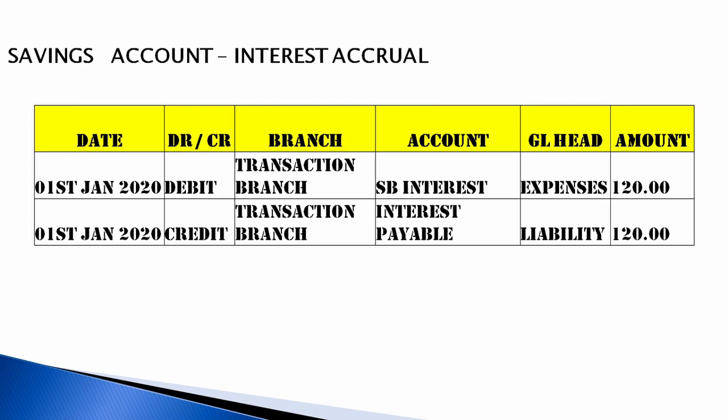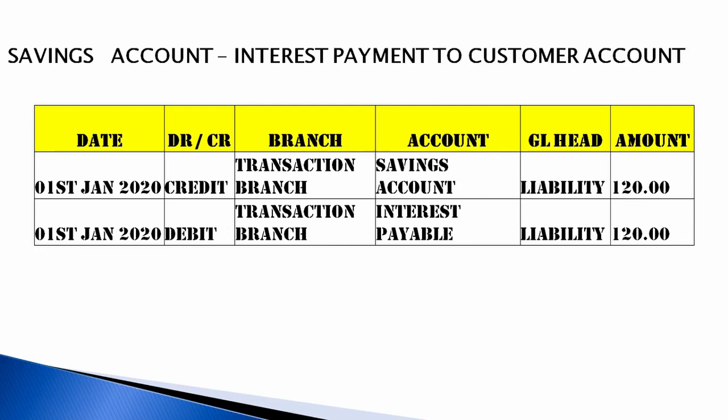For savings account interest accrual, debit the interest expense and credit the interest payable account. Interest payable is a liability and SB interest is an expense. When this interest is credited to the customer's account, the interest payable (already set aside) is debited and credited to the savings bank account, which is a liability.